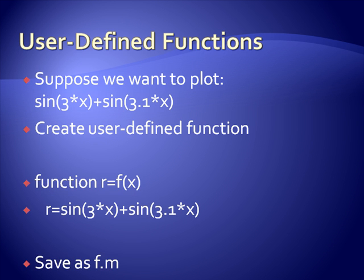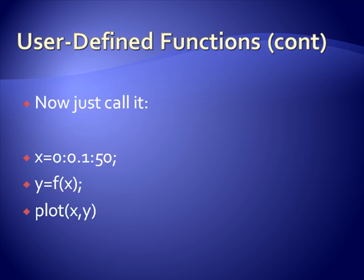So to call this, we just for example can create a vector x from 0 to 50 incrementing by point 1. y equals f of x. For each element in x, it sends that element to the function we just wrote, returns the value and then sticks it into y and then we can plot it.